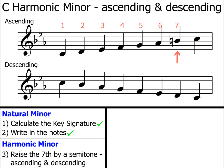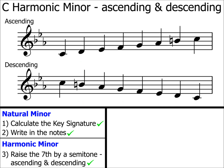We haven't quite finished yet. Step three tells us to raise the seventh by a semitone in both the ascending and descending scale. We've only tackled the ascending scale so far. Now, which is the seventh note? The seventh note is always calculated by counting up from the starting note, so the seventh note is the B flat. You raise this by a semitone — it also becomes B natural. We've completed step three and we now have C harmonic minor ascending and descending.